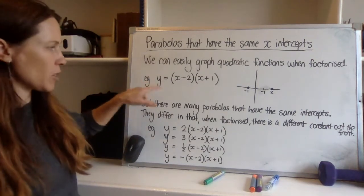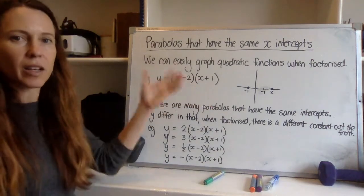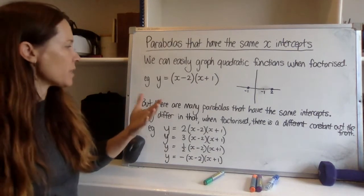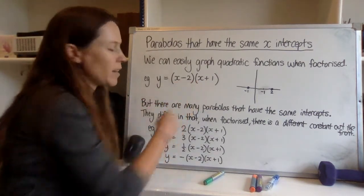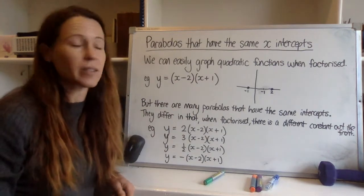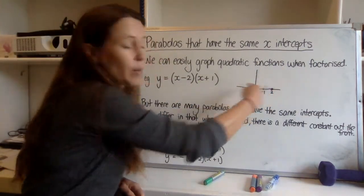So if we're given a quadratic function and it already looks like this, a lot of the work is already done. We can see when asking ourselves which way up it goes that if we expanded this out we would have x squared. So that tells us it's a positive one, so it must be upright.